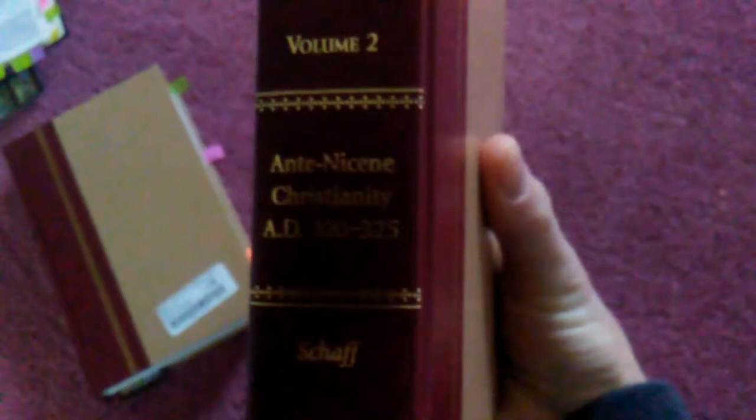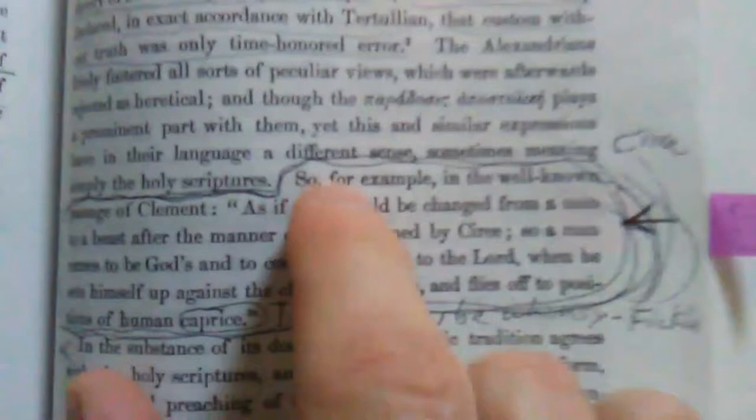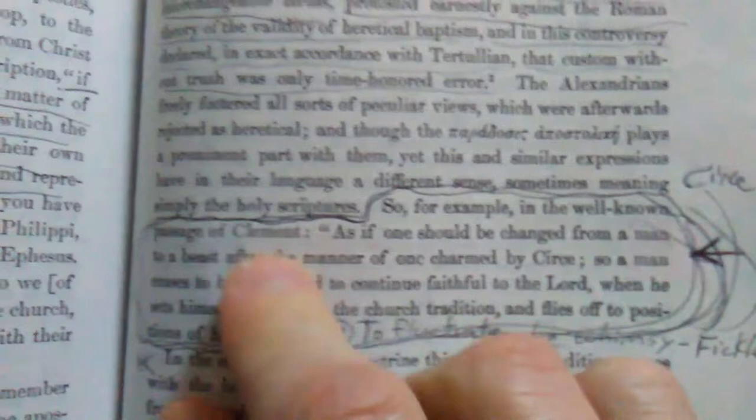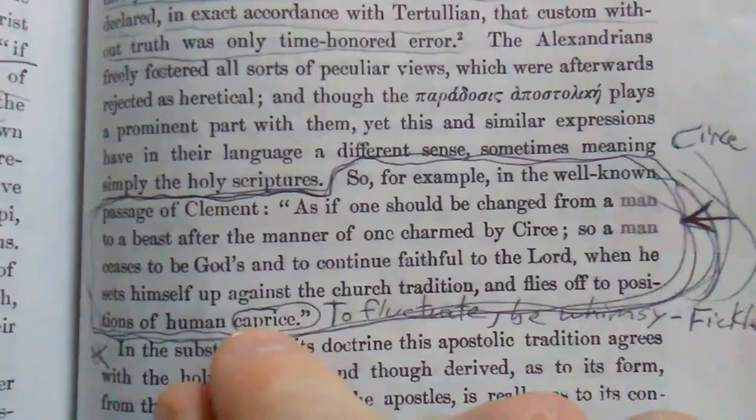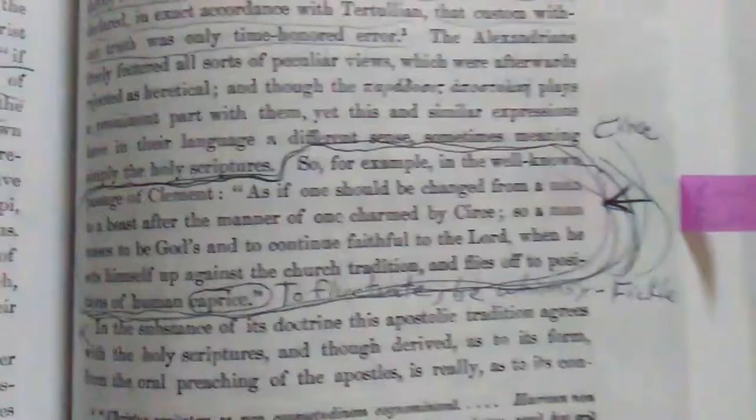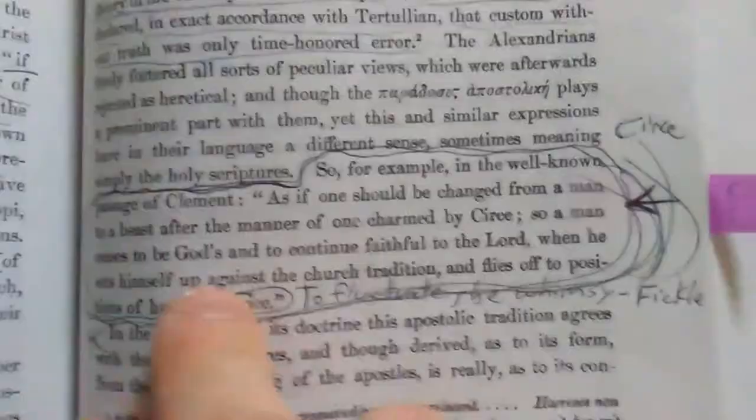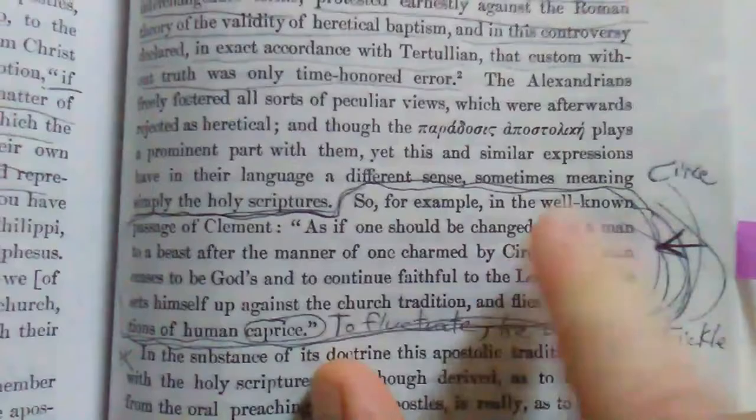So right here in Apostolic Christianity by Philip Schaff, over here, this is a quote by Clement. It says, so for example, in the well-known passage of Clement, as if one should be changed from a man to a beast after the manner of one charmed by Circe, so a man ceases to be gods and to continue faithful to the Lord when he sets himself up against the church tradition and flies off the positions of human caprice to fluctuate, be whimsy, fickle. And Circe is where the word church comes from. I've done a lot of research on that on my other videos. I have a whole library on just Circe alone. That's where the word church comes from. The ecclesia, the called out, isn't the same as church.